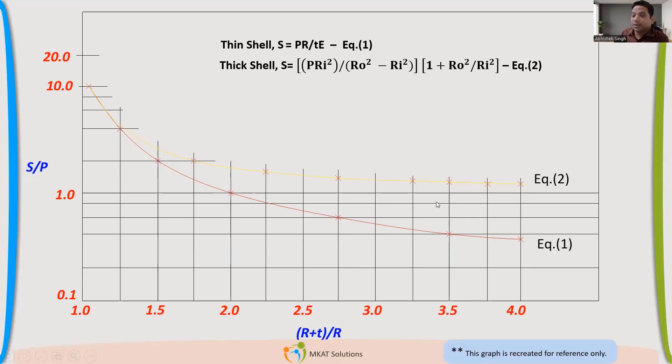So we cannot adopt equation 1 as it is if you want to find the stresses for thick shell also. Now what to do? So ASME, when ASME committee was trying to find out this equation, they did experimental plus theoretical calculation. So when they drew these two graphs, they started modifying the thin shell theory equation. The PR/T, they started tweaking that equation and tried to see whether we are getting some graph which is good for this ratio.